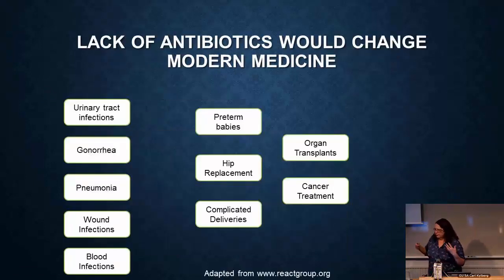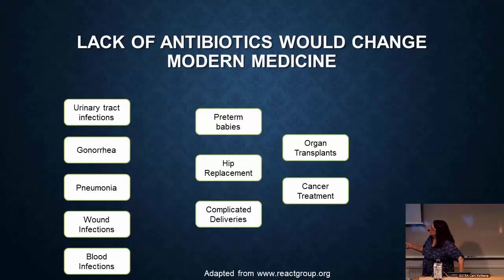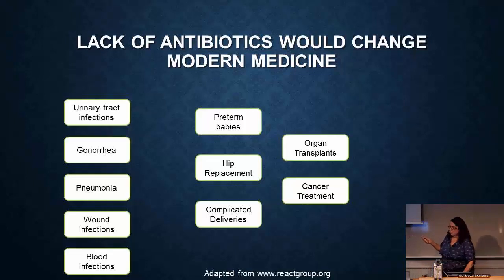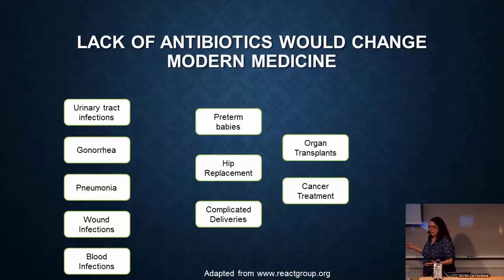The impact of not having effective antibiotics extends beyond treating actual infections such as urinary tract infections, gonorrhea, pneumonia, wound infections, and blood infections. Antibiotics are also commonly prescribed for a number of other procedures and conditions — for example, for preterm babies, hip replacements, complicated deliveries, pregnancies, organ transplants, and cancer treatment. So without antibiotics, all of these groups would be affected.